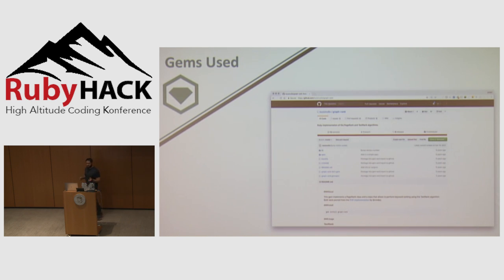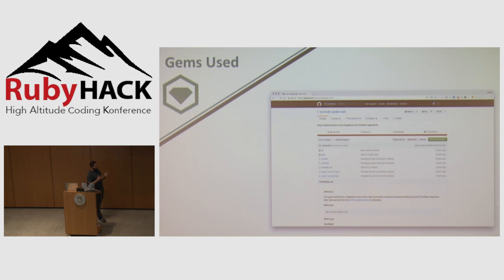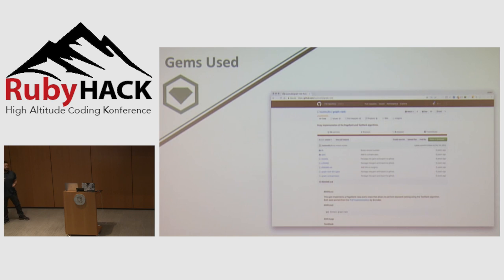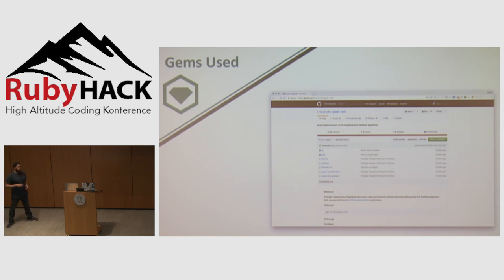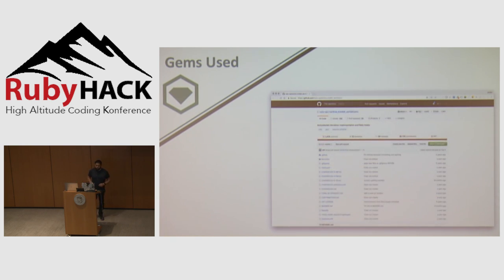The next gem is the graph rank gem. When I created my initial implementation, I started by writing the tokenization process myself. It worked, but through research I discovered this gem, which actually does what I was doing much better. It also incorporates a few other very helpful tools, such as being able to work with stop words. I ended up replacing my own implementation with a call to this gem and it worked quite well.